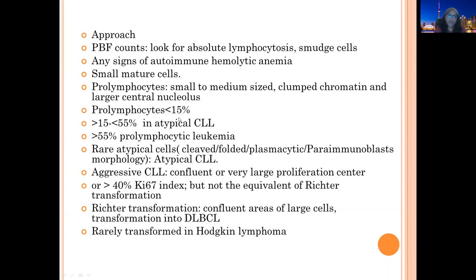In typical CLL, prolymphocytes are less than 15%. If more than 15% but less than 55%, this is atypical CLL. If more than 55%, this is prolymphocytic leukemia. Sometimes CLL cells have atypical morphology — they look cleaved, folded, plasmacytic, or more paraimmunoblast-like; this is a feature of atypical CLL. In nodal tissue, there can be confluent large proliferation centers, and sometimes Ki-67 is more than 40% — this is classified as aggressive CLL, not Richter transformation. For Richter transformation, we need a confluent area of large cells indicating transformation into diffuse large B-cell lymphoma. Very rarely, CLL can convert into Hodgkin lymphoma.